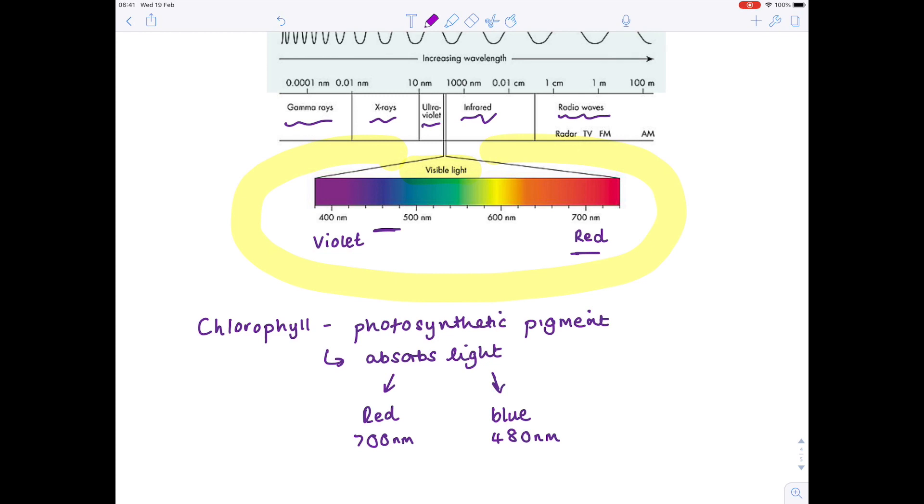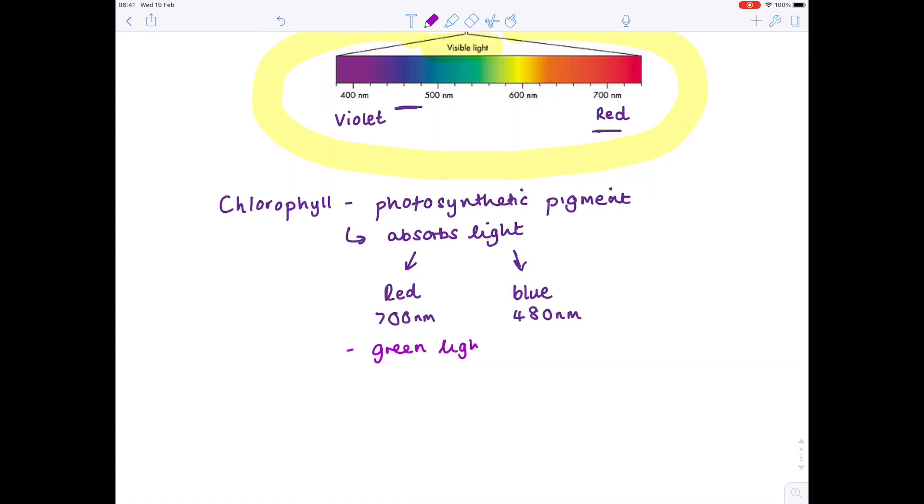Now, crucially, green light is not absorbed effectively. In fact, it is reflected. And that is actually why most plants have green leaves, because they are reflecting green light, so therefore they appear green. So green light is absorbed less effectively, and most is reflected. Therefore, leaves containing chlorophyll will appear green to us.